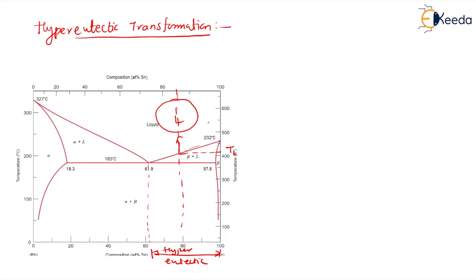What we are going to do — just as we did in the hypo-eutectic — we go on cooling this liquid, go on dropping the temperature. At the liquidus line the temperature is TL, and when the temperature drops below TL, since this region is rich in B, beta is definitely going to nucleate.